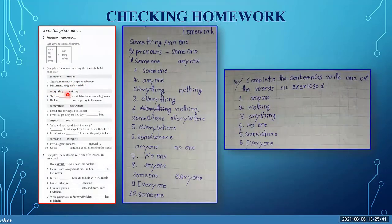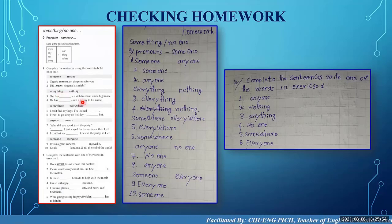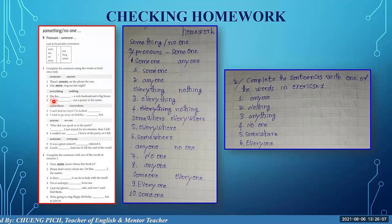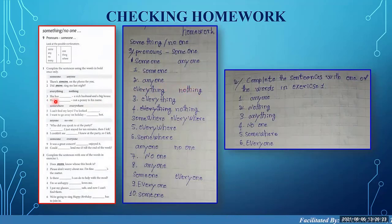Next we have 'everything' and 'nothing.' Number three: 'She has a rich husband and a big house' — so we use 'everything,' because she has everything. Number four: 'He has not a penny to his name' — so the answer is 'nothing.' He has nothing, not a penny to his name.